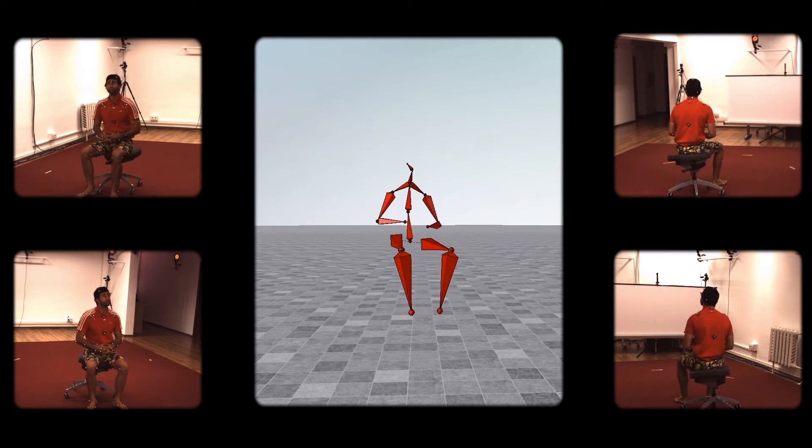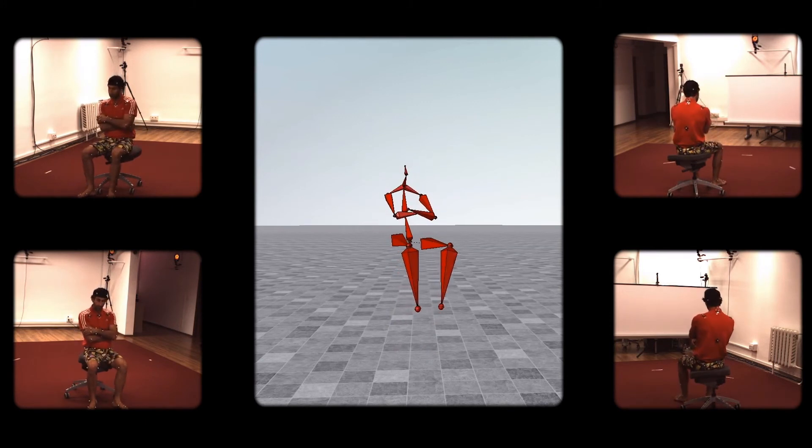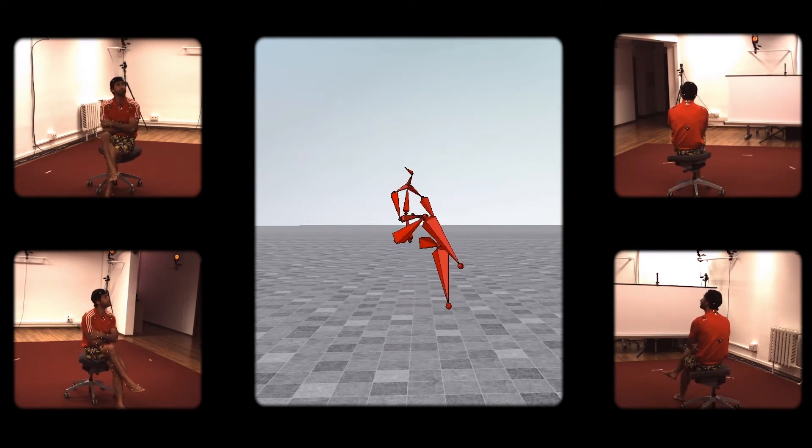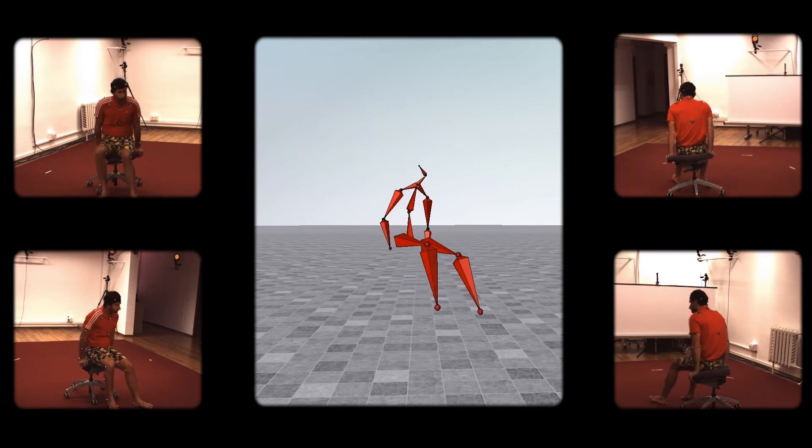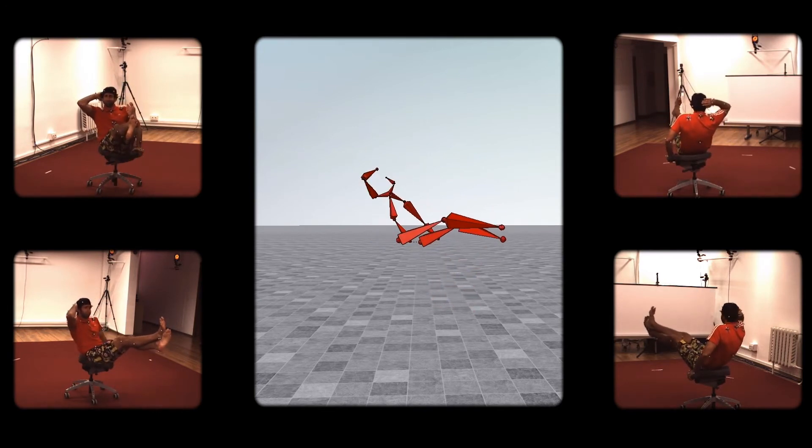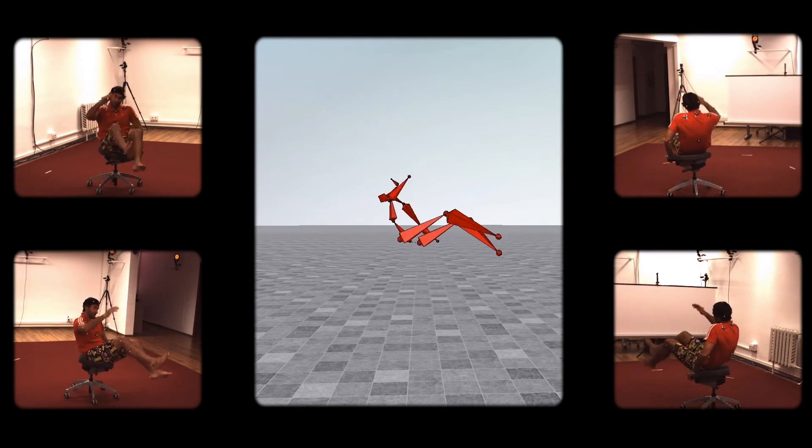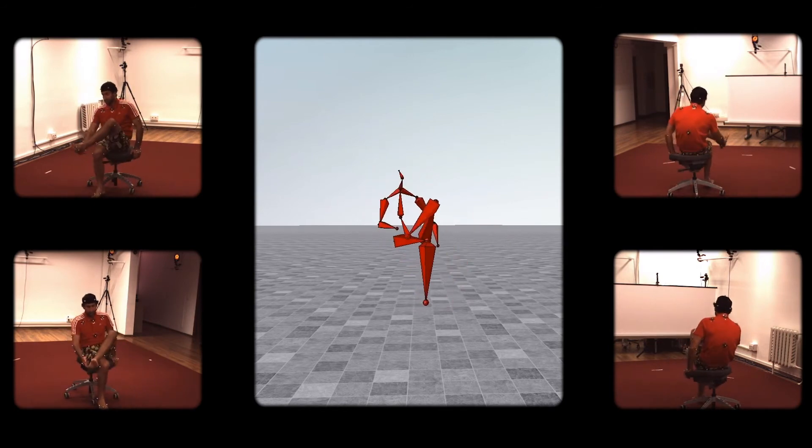We demonstrate quantitative results on several datasets. Here are our results on the Human 3.6 million dataset. The animation in the middle is reconstructed out of four video streams. Notice the smoothness and the naturalness of the motion.